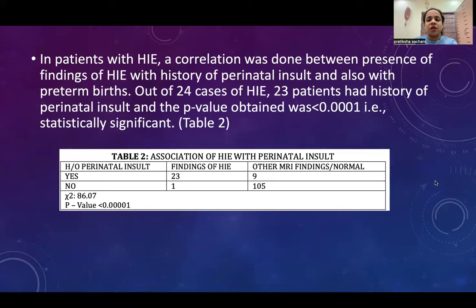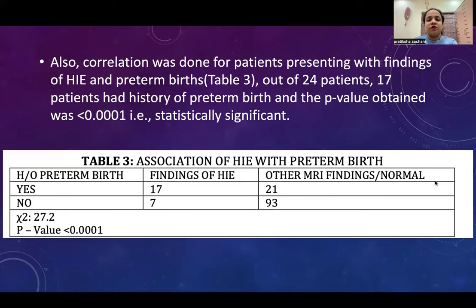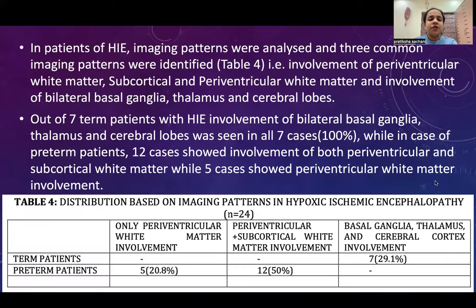In patients with HIE, a correlation was done between the presence of HIE on MRI with the history of perinatal insult and also with preterm birth. Out of 24 cases of HIE, 23 patients had a history of perinatal insult. Correlation was also done for patients presenting with HIE findings and preterm birth; out of 24 patients, 17 had a history of preterm birth. Three common imaging patterns were identified: involvement of periventricular white matter; subcortical and periventricular white matter; and involvement of bilateral basal ganglia, thalamus and cerebral lobes. Out of 7 term patients with HIE, involvement of bilateral basal ganglia, thalamus and cerebral lobes was seen in all 7 cases.